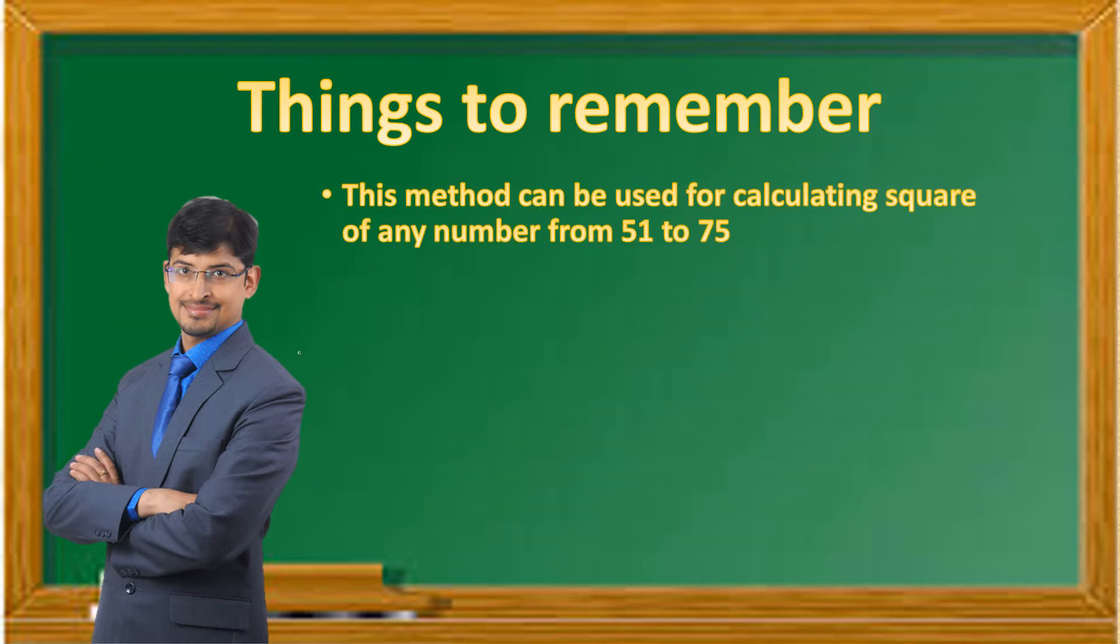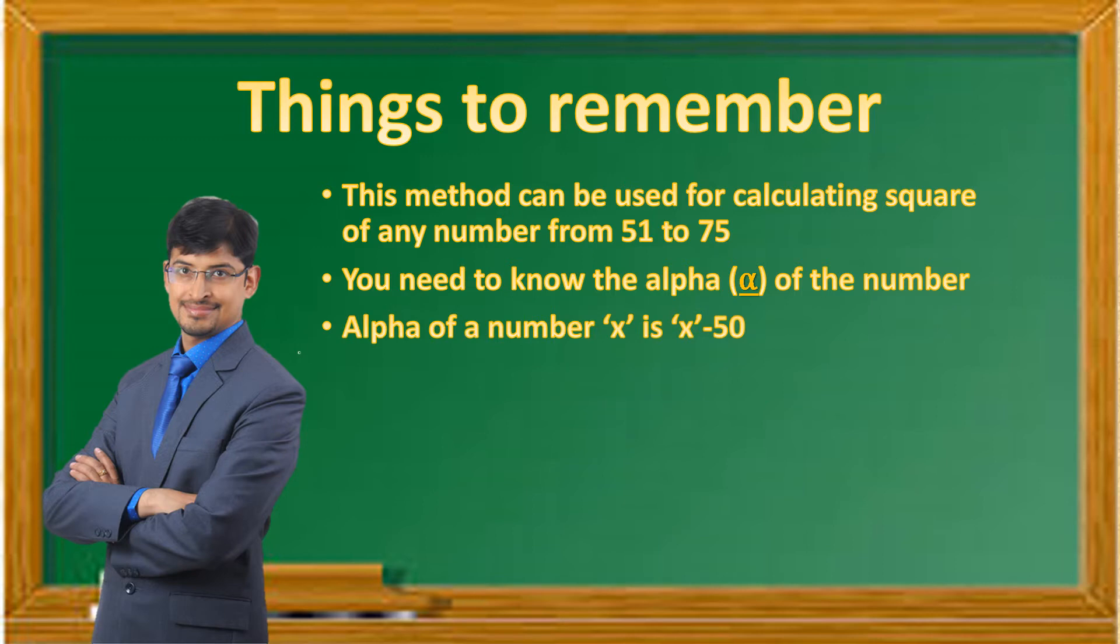This method can be used for calculating squares of any numbers from 51 to 75. To do that, you need to know the alpha of a number. The alpha of a number x is x minus 50.